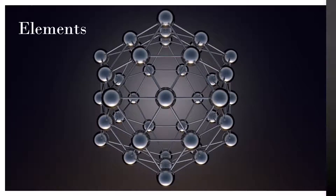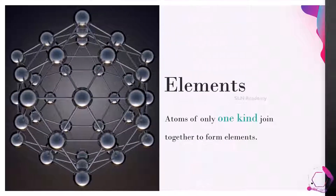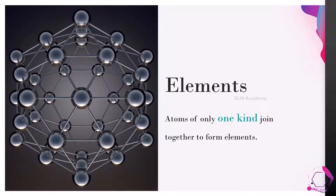Elements. There are 90 naturally occurring elements present in our earth. Elements are one type of molecules. Atoms of only one kind join to form elements.